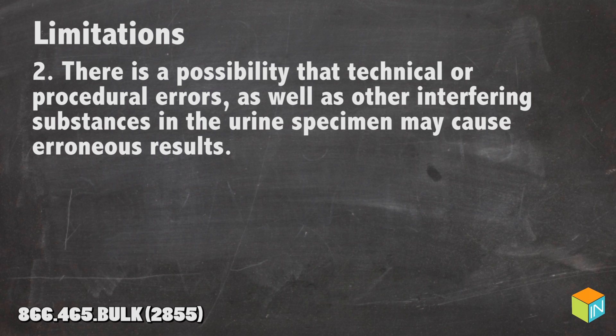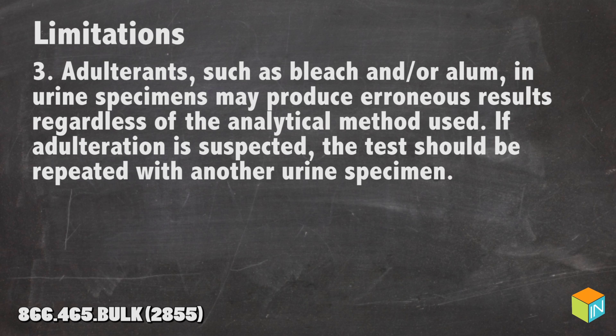Limitation 2: There is a possibility that technical or procedural errors, as well as other interfering substances in the urine specimen, may cause erroneous results. Adulterants such as bleach or alum in urine specimens may produce erroneous results regardless of analytical method used. If adulteration is suspected, the test should be repeated with another urine specimen.